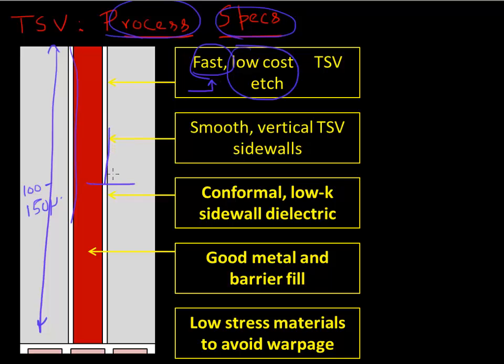We want these vertical, nice, smooth side walls. And we want a good step coverage for our oxide. So we want the same thickness of your oxide on the side wall. So we want a conformal and good deposition of this oxide layer. Again, you want a good metal and barrier fill, and you want to avoid stress. Remember, this is very important. So we want to minimize the stress during this whole process flow as much as we can.